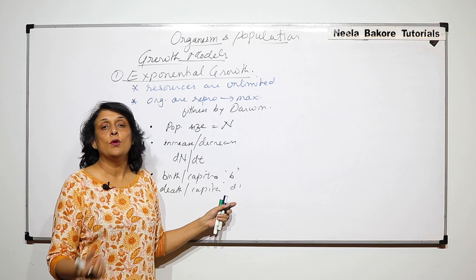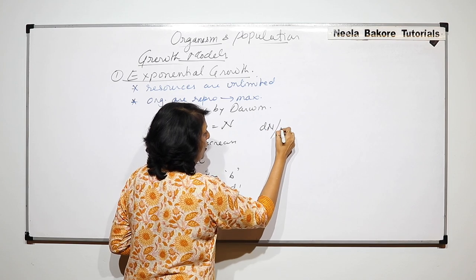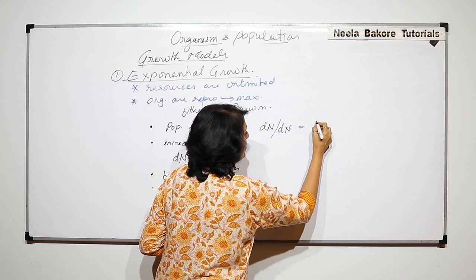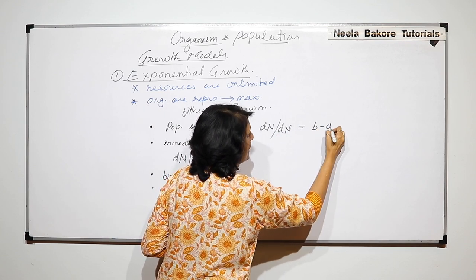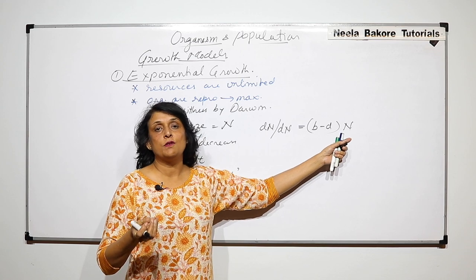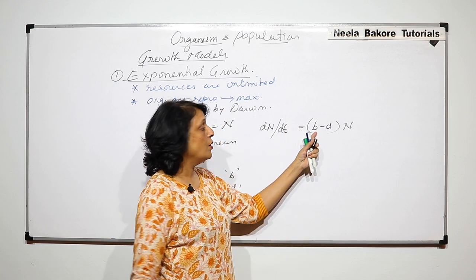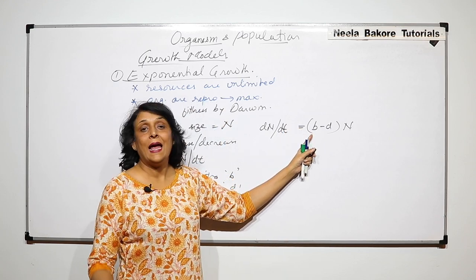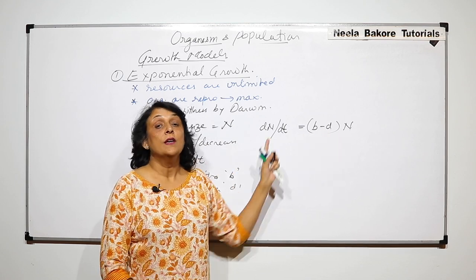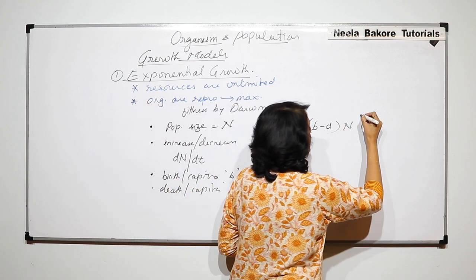Birth per capita is taken as small b and death per capita as small d. To find the increase or decrease in population, the equation is: dN/dt = (b - d) × N. That is, in a given time period, how many are added per capita and how many die per capita, multiplied by the existing population — this gives us the exponential growth.